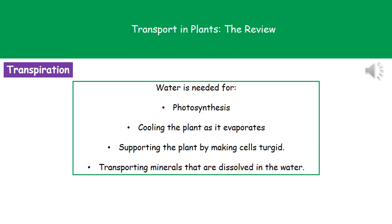The reason our plant actually needs water in the first place is for four important reasons. Firstly, photosynthesis — we know that water is needed for photosynthesis; it's one of those raw materials. Secondly, as that water evaporates from our leaves it's going to cool them down. It's also going to be used to help support the plant in making those cells turgid, as we saw in a previous lesson. And it's our way of transporting minerals, because the minerals become dissolved in the water, and then as the water moves, the minerals move.